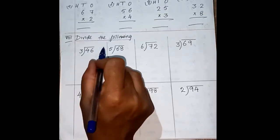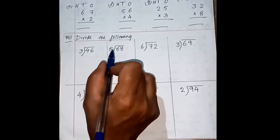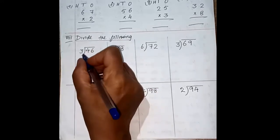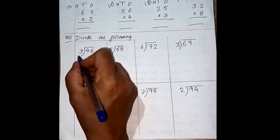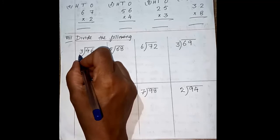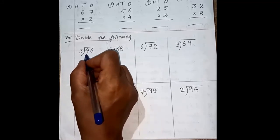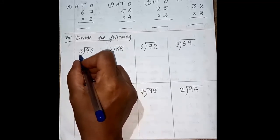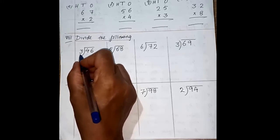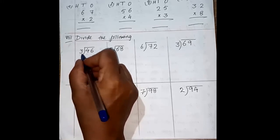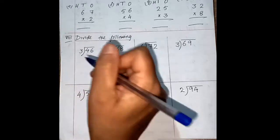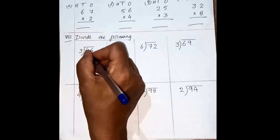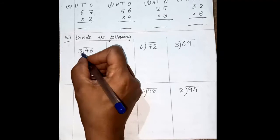Now here children, 8 bit — divide the following. These are the division sums. Do very carefully. Read the table of 3 here. First, you have to see the first number. If the first number is greater than the divisor, you have to start with one number. This is long division, so we have to do it step by step.